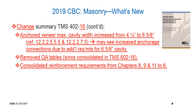Still on TMS 402-16, with respect to anchored veneer, maximum cavity requirements have been increased from the previous maximum of 4.5 inches up to 6 and 5/8 inches. You may see an increase in anchorage connections because those are required given the increase in that gap. Keep this in mind for projects where you see this increased cavity specified on the drawings. Some design professionals may still choose not to go to this extent, but if they do, be aware that there are increased anchorage requirements.